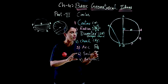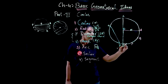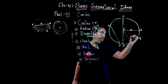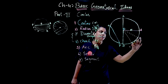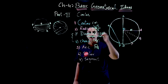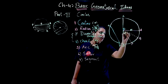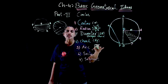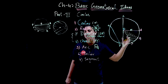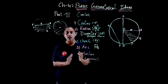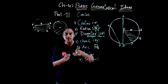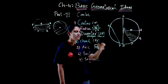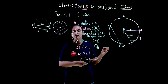Now let us see what a sector and a segment are, and what the difference is. This is very important. We know what an arc is. If we join both points P and Q to the center — that is, PO and OQ — the area that is formed is called the sector of the circle. Think of a round cake: if we cut the cake from the center and remove that piece, that piece is the sector.